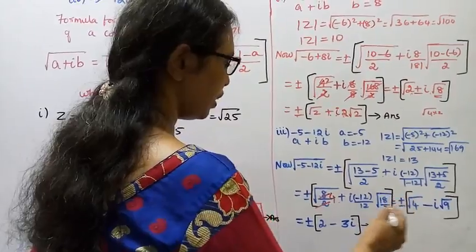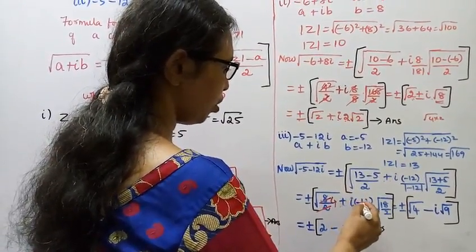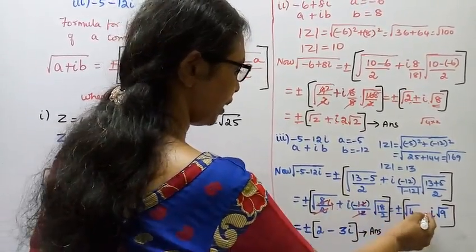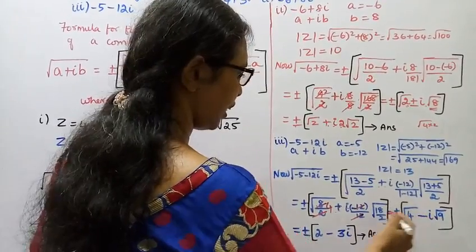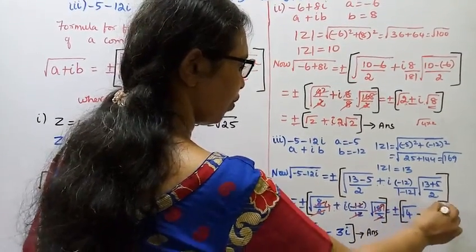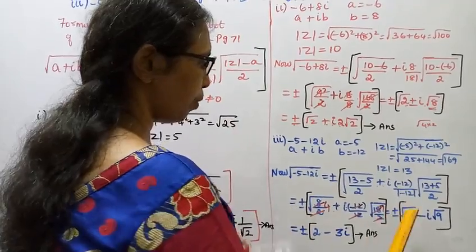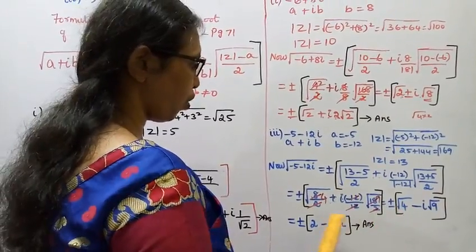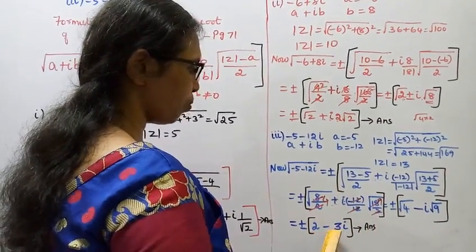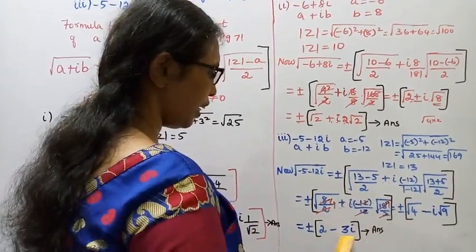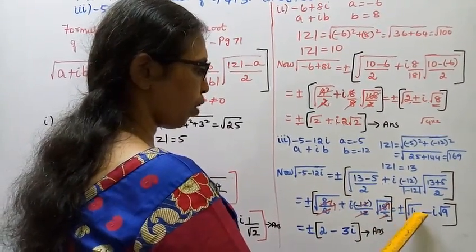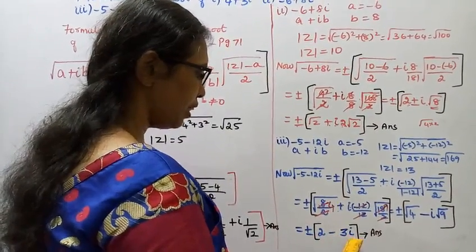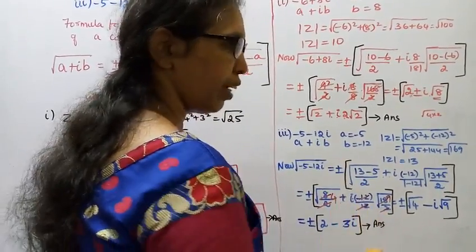Continuing: (13 plus 5) equals 18 by 2. Square root of (8 by 2) equals square root of 4 equals 2. And minus 12 by 12 gives minus i, into square root of (18 by 2) equals square root of 9 equals 3. So the answer is plus or minus (square root of 4 minus i times square root of 9), that is plus or minus (2 minus 3i).